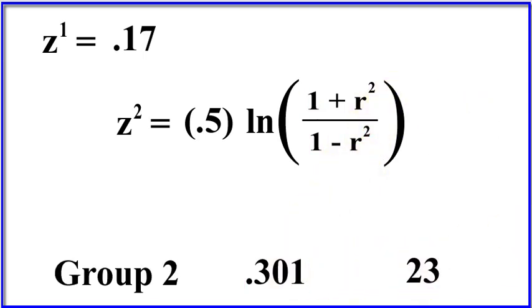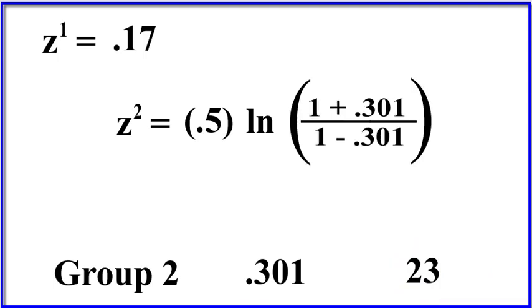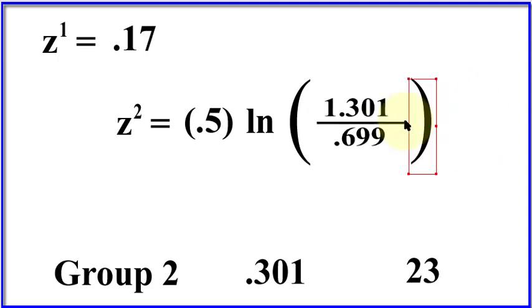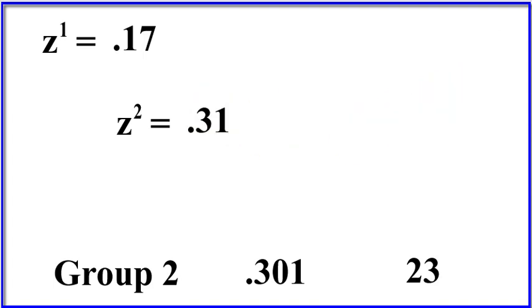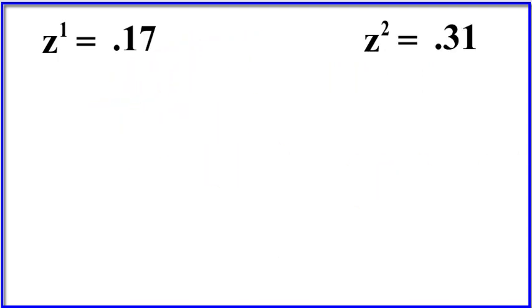And we substitute known values. Do a little bit of math. Do a little bit more math. Take the natural log of 1.8612. And we get that number and we multiply that by 0.5. And we get our second z-prime. So this is the z-prime for the second correlation. Move it up there.